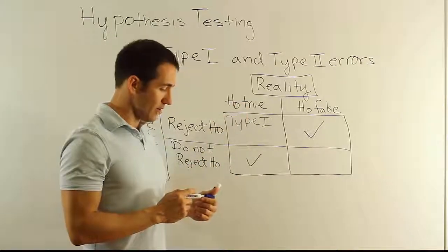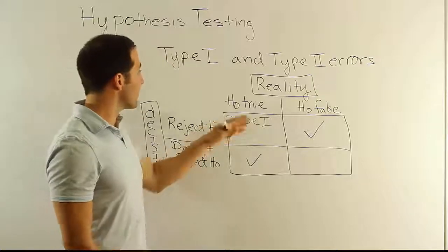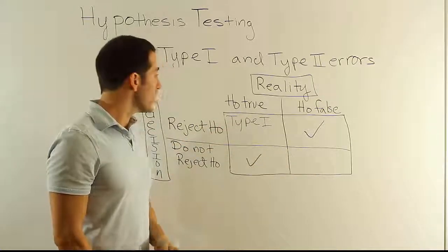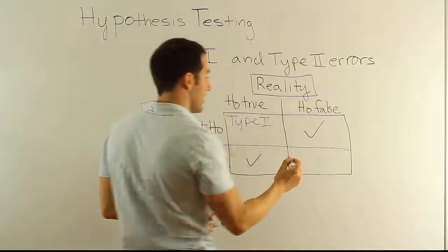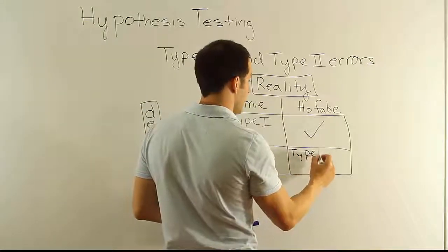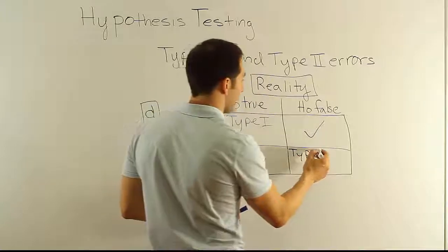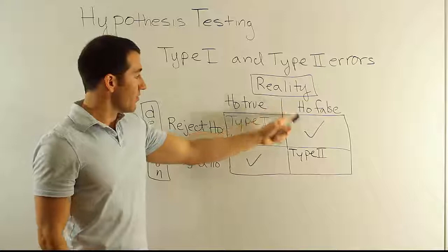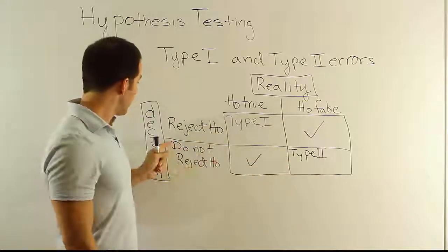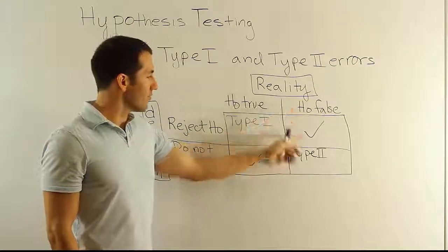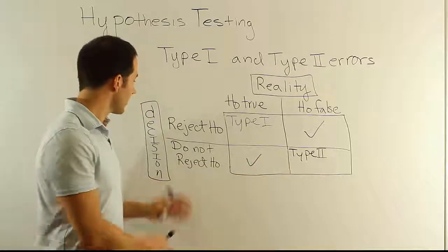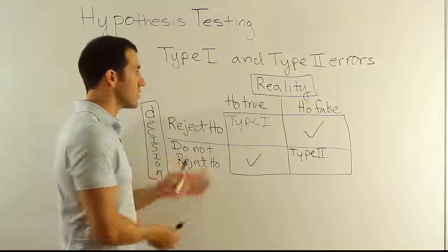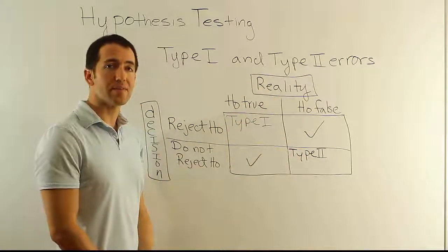Alright, and finally this last case scenario. Since I've told you there's a Type I and Type II error, you can probably guess that this must be the other error, the Type II error. So I'll go ahead and write that in and then you can listen to me explain why that's in fact an error. Okay, well if the H0 is false and we do not reject it, we're essentially letting a falsehood stand out there as being true. We have this opportunity to reject a false statement and we didn't take it. So it's a mistake, it's a Type II error.